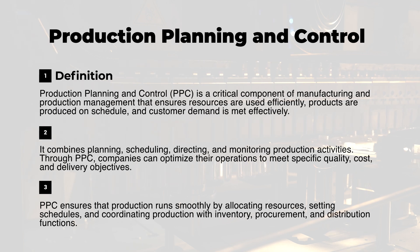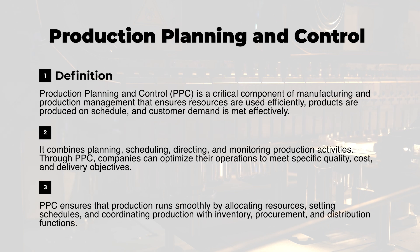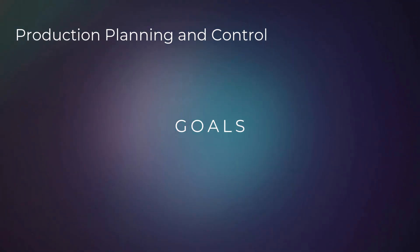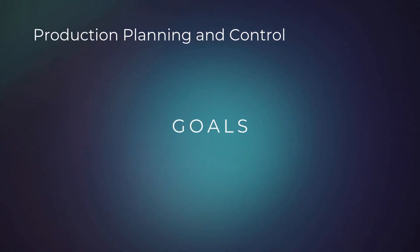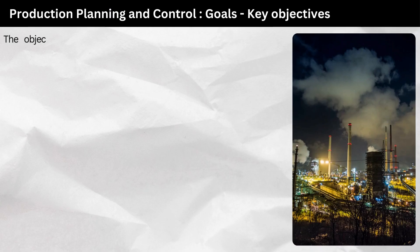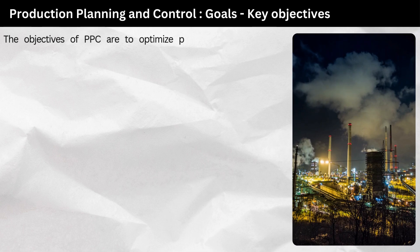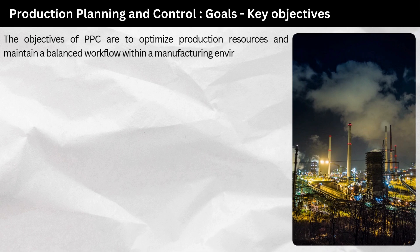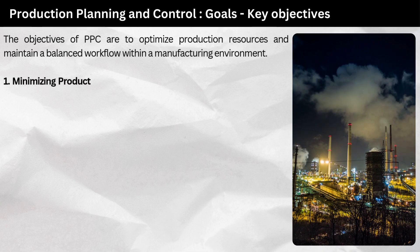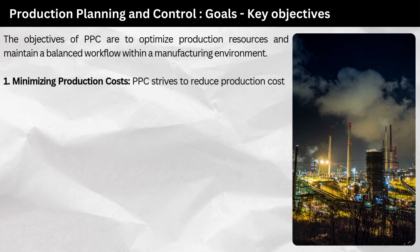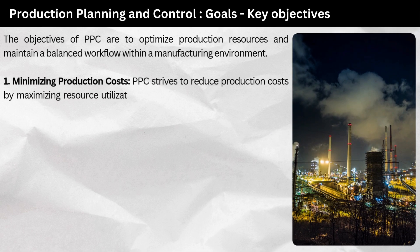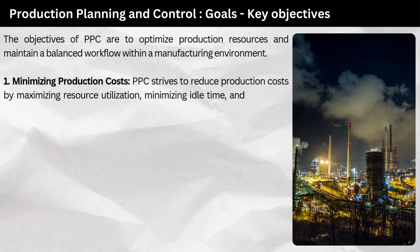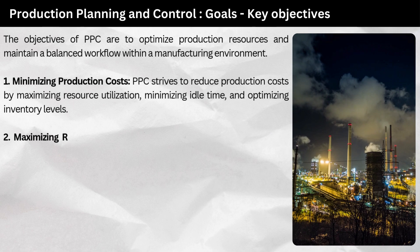PPC ensures that production runs smoothly by allocating resources, setting schedules, and coordinating production with inventory, procurement, and distribution functions. The objectives of PPC are to optimize production resources and maintain a balanced workflow. Key objectives include: minimizing production costs — PPC strives to reduce costs by maximizing resource utilization, minimizing idle time, and optimizing inventory levels.